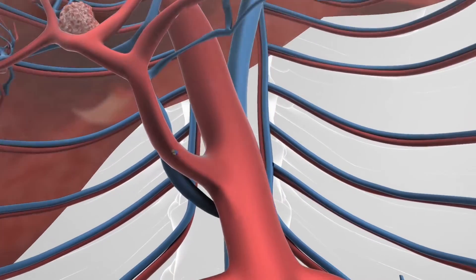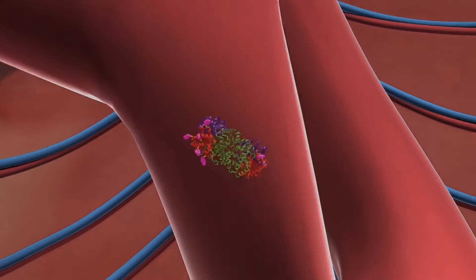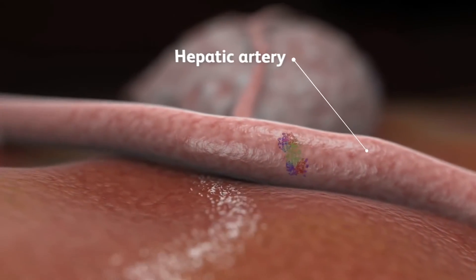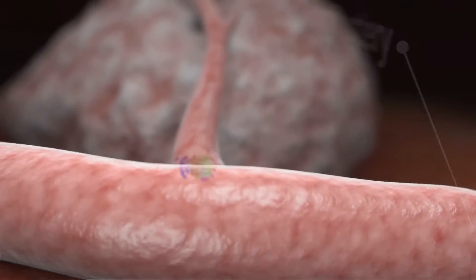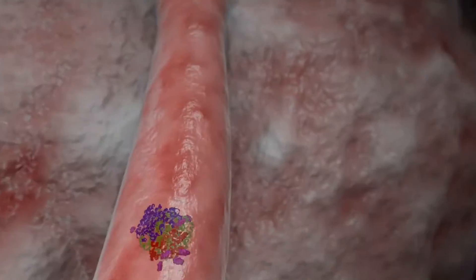Intravenous infusion provides a means of delivering TBI-302 to the liver via the hepatic artery through which tumors derive most of their blood supply, further enhancing liver tumor targeting.